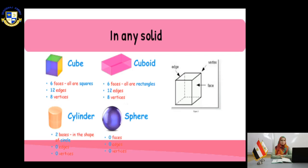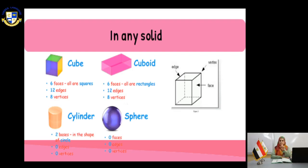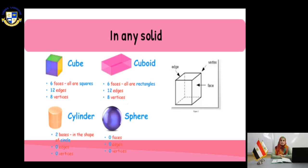Let's start with the cube. How many faces can you see? You have six faces — each face is in the shape of a square. How many edges can you see? Count the lines. That's right: 12. How many vertices can you see? Vertex is one, vertices is many. You have eight vertices in the cube.